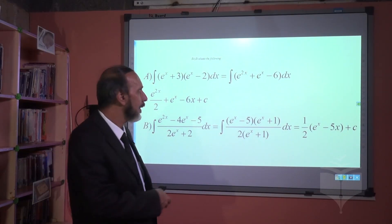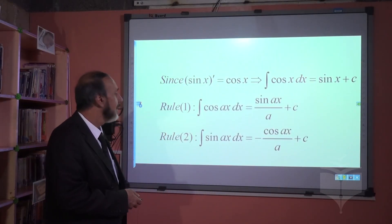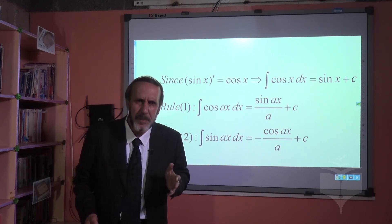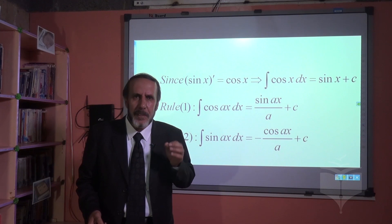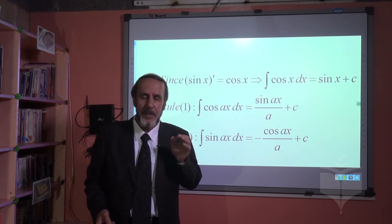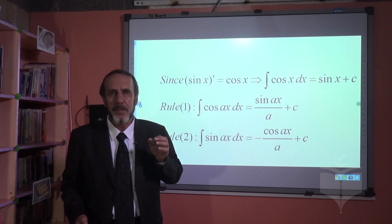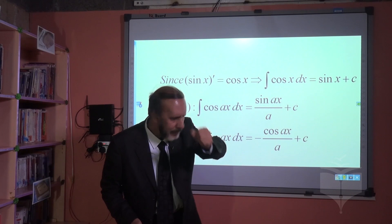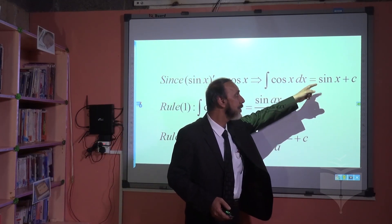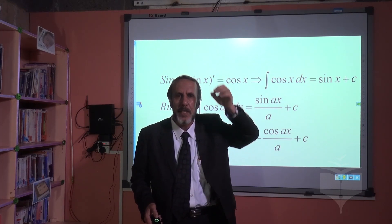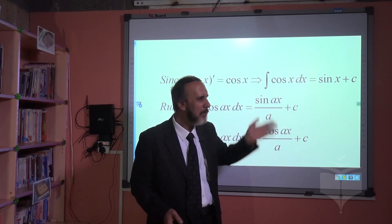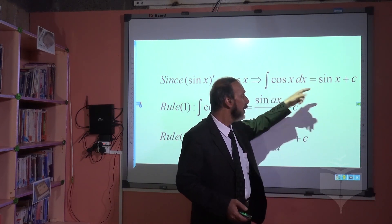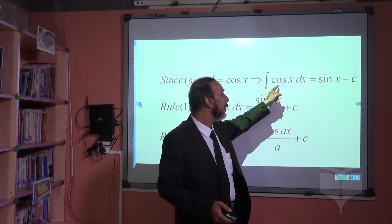Let us see what we have. What is the derivative of sine? The derivative of sine is cosine — yes, right. We took it in chapter 6, differentiation. The derivative of sine is cosine. The opposite: what is the integration of cosine? Integration of cosine is sine x. How do we check our answer? The derivative of sine is cosine — so sine is the indefinite integral of cosine.